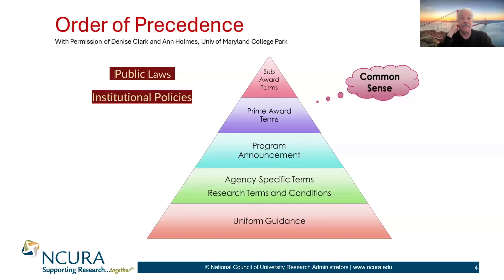Federal agencies adopted some federal-wide and agency-specific terms of research terms and conditions. Federal research terms and conditions implement the changes to the Uniform Guidance that were mandated by OMB. This overlay document incorporates the UG by reference, clarifying and supplementing select provisions where appropriate. These provide the groundwork for rules and guidelines.